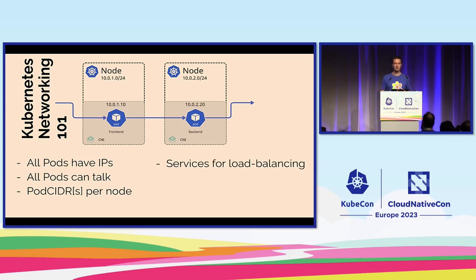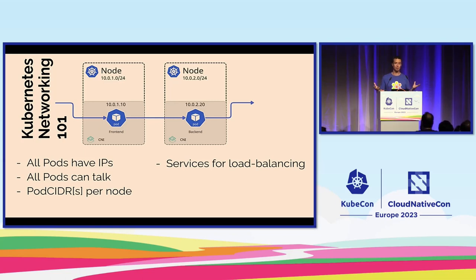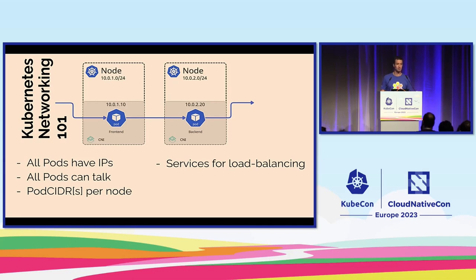Kubernetes uses services for load balancing — you're probably using this all the time. This is the load balancing layer of Kubernetes, allowing us to have multiple replicas of a pod addressed via a single service name or single cluster IP. Kubernetes will load balance to any of those replicas, and we'll look into some troubleshooting there as well.